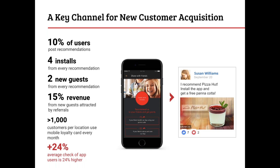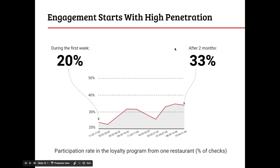Another very powerful statistic: on average, 24% of orders placed through the app are 24% higher in value than orders placed otherwise. Also, a great result from the Pizza Hut case study is that after two months, one in every three customers had used the app — a very high penetration rate which results in a high revenue stream for the business.